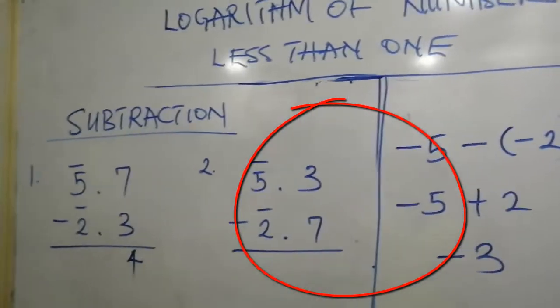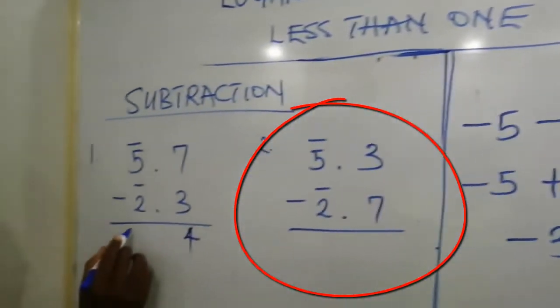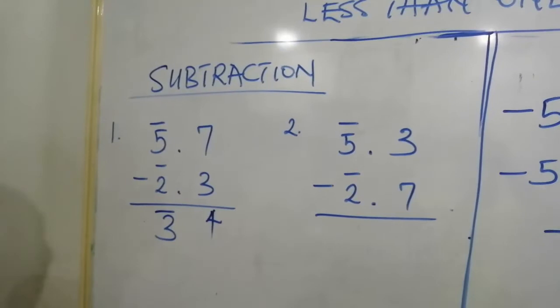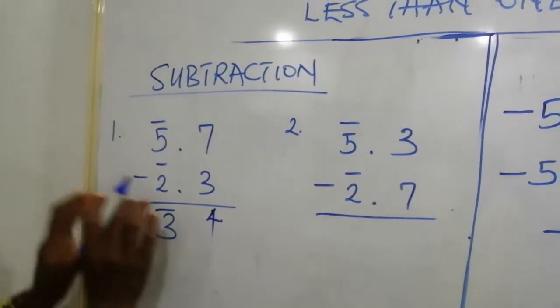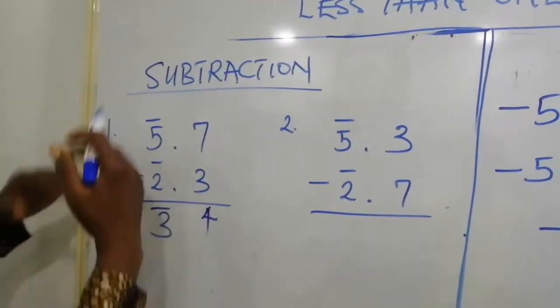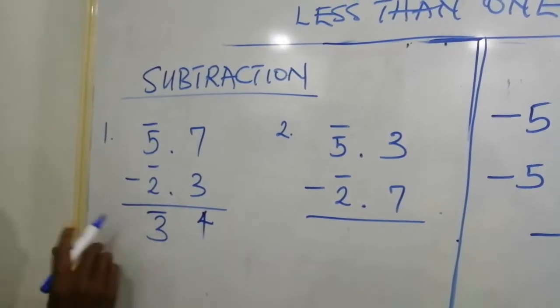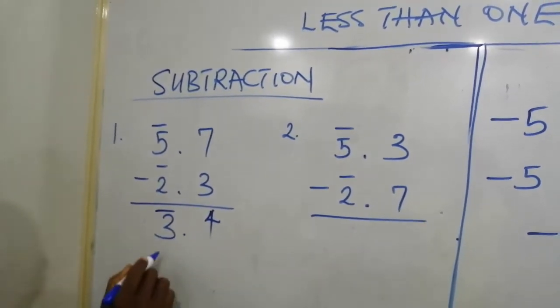And for logarithm, you cannot write minus 3. That will be bar 3. So, that means taking bar 2.3 away from bar 5.7 will give us bar 3.4.